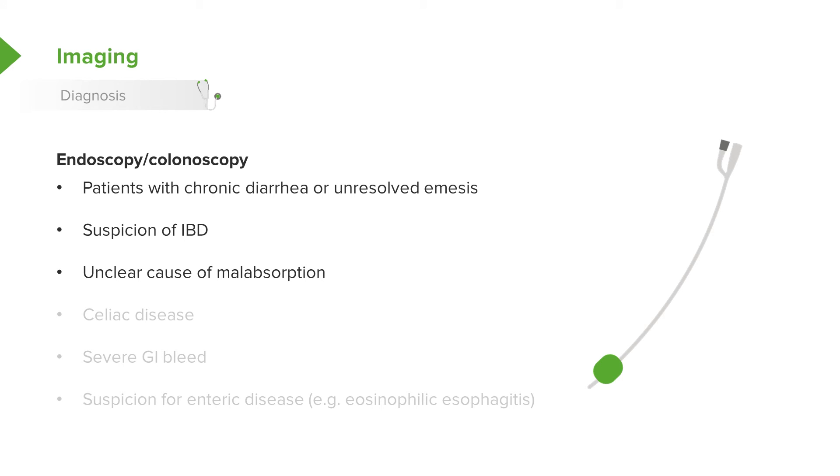If there's an unclear cause of malabsorption, we'll do endoscopy to try and figure out what's going on. Sometimes the biopsies can show us a problem with the brush border in the colon, for example, which may give us a clue as to what's going on and why that child is not able to absorb nutrients.